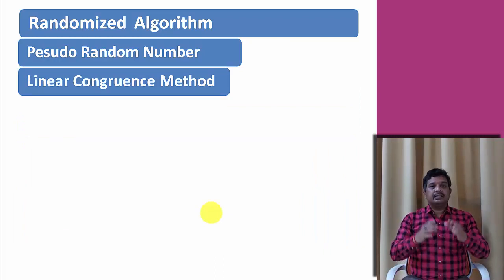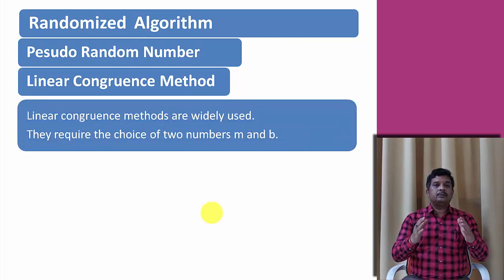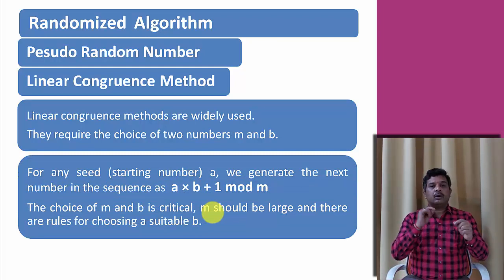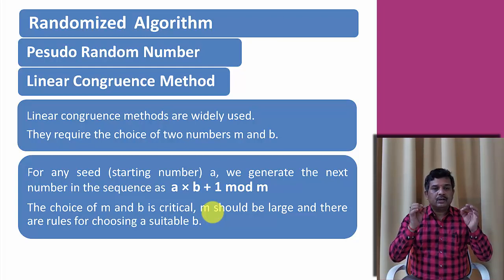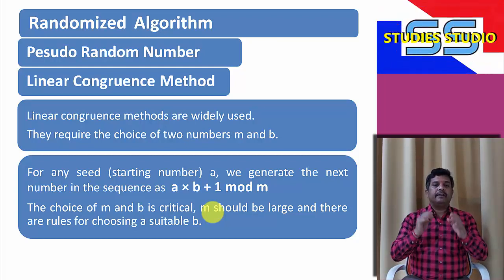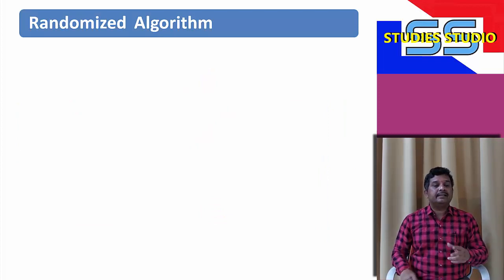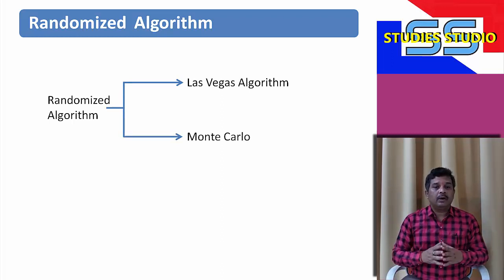One simple algorithm to generate pseudo-random numbers is the linear congruence method, which is very widely used. It requires the choice of two numbers m and b. For any seeding or starting number a, we generate the next number in the sequence as (a × b + 1) mod m. The choice of m and b is critical — m should be very large and there are rules to choose a suitable b. Randomized algorithms are of two types: Las Vegas algorithm and Monte Carlo algorithm.